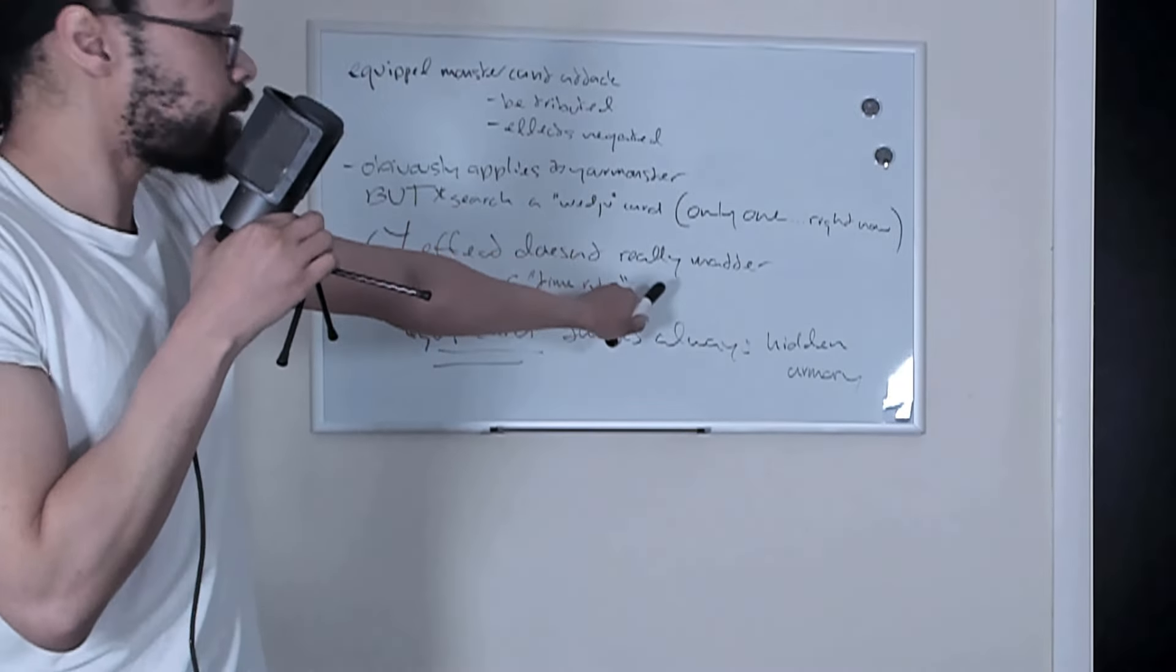Worst-but-not-so-worst-case scenario: it effectively shuts down an opponent's monster. Still can be linked away, but the point is that it can be equipped to your opponent's monster. Why did it have to be equipped to your monster to search one card? It would have been too good or something? Absolutely not, man—that's what it's supposed to do.